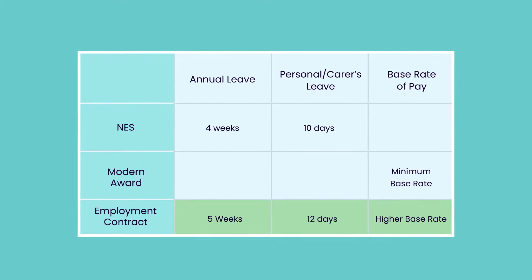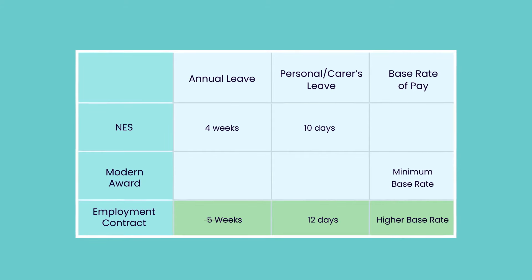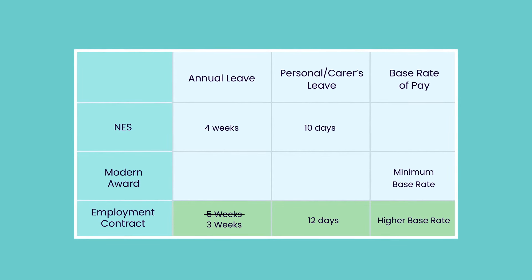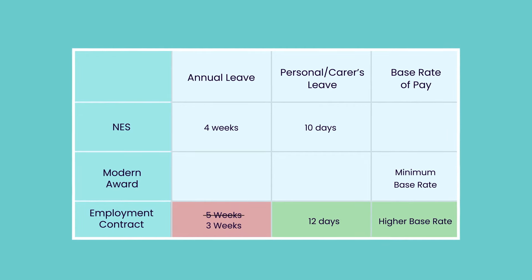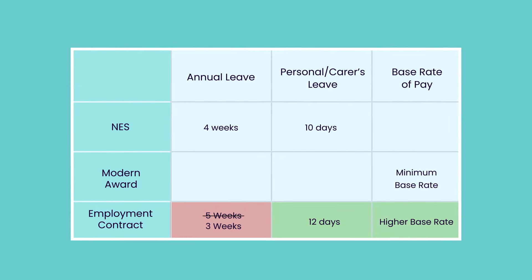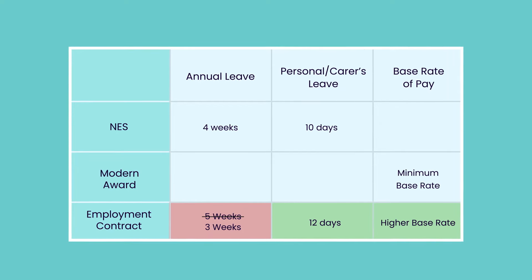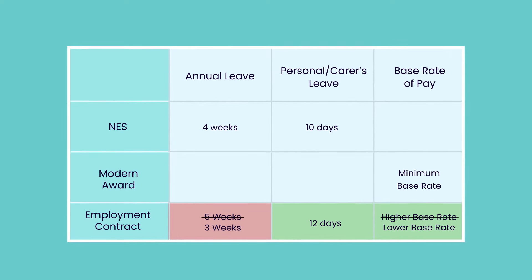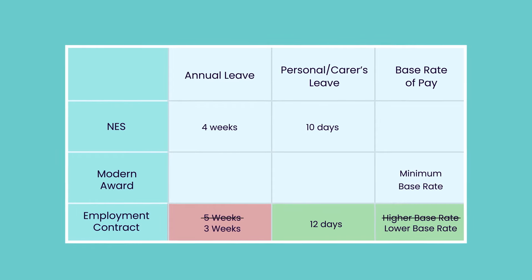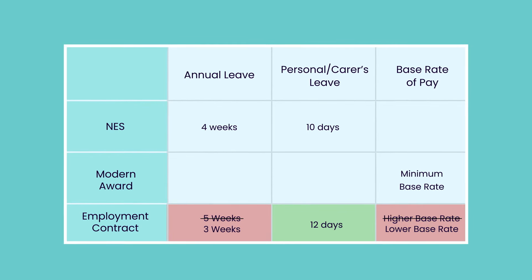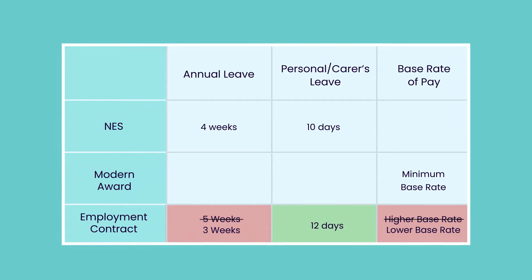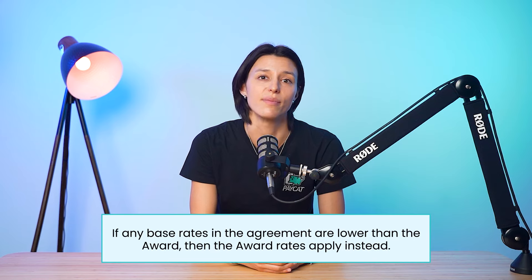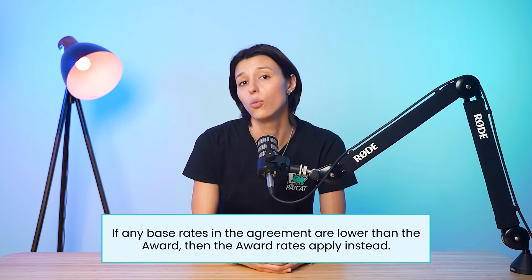But if you try to include a clause stating employees are only entitled to three weeks of annual leave per year, this would be undercutting the minimum standard of four weeks set by the NES and therefore would not be legally valid. Similarly, if you attempted to pay your employees less than the minimum wage rates outlined in the General Retail Industry Award, this would also be unlawful. So if you've got an enterprise agreement in place, you'll need to make sure it at least meets the minimum wage rates and conditions in the relevant modern award. If any base rates in the agreement are lower than the award, then the award rates apply instead.